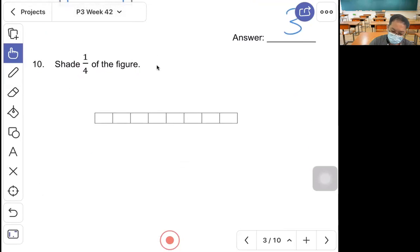Question 10, shade one quarter of the figure. First you divide into 4 equal parts, then shade 2 units.